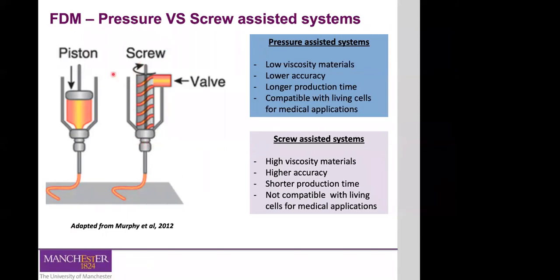In the piston-assisted system, you have a plunger that can be pneumatically driven to push the material downwards and force it through the nozzle onto the building platform. Or you can drive this piston with a stepper motor, which gives you better control over the flow of the semi-molten material into the building platform, and that will impact the accuracy and resolution of your parts.